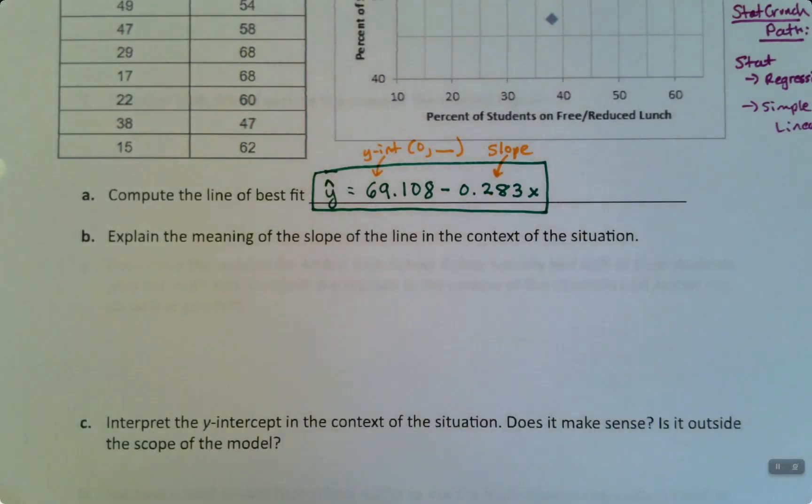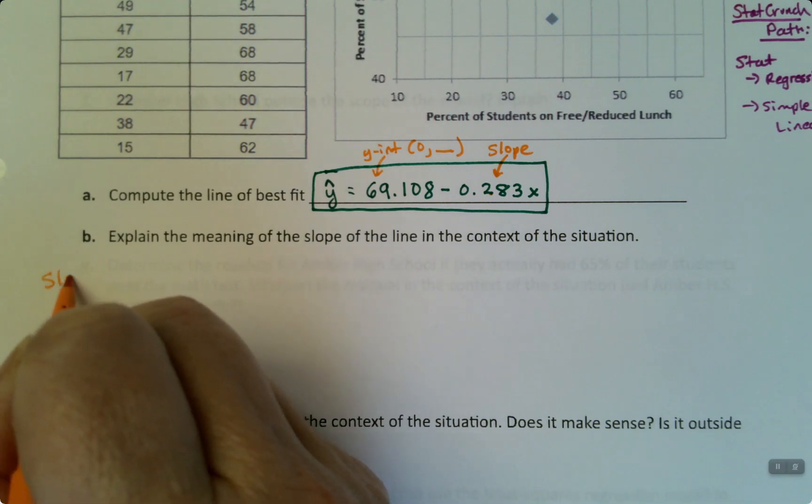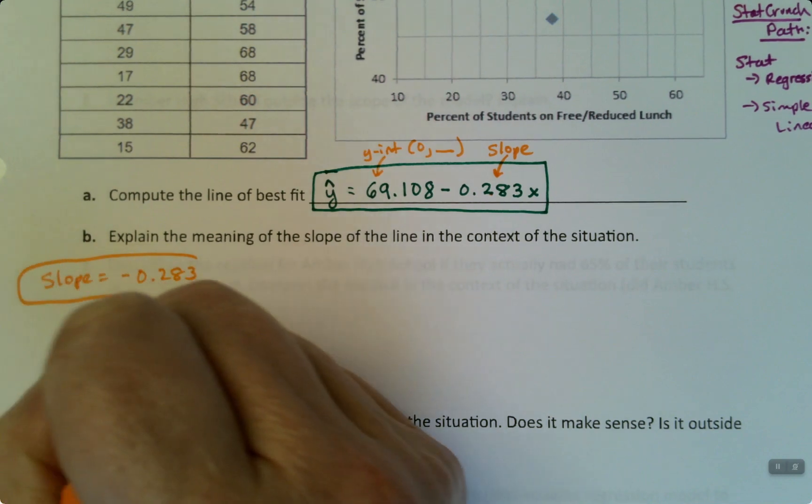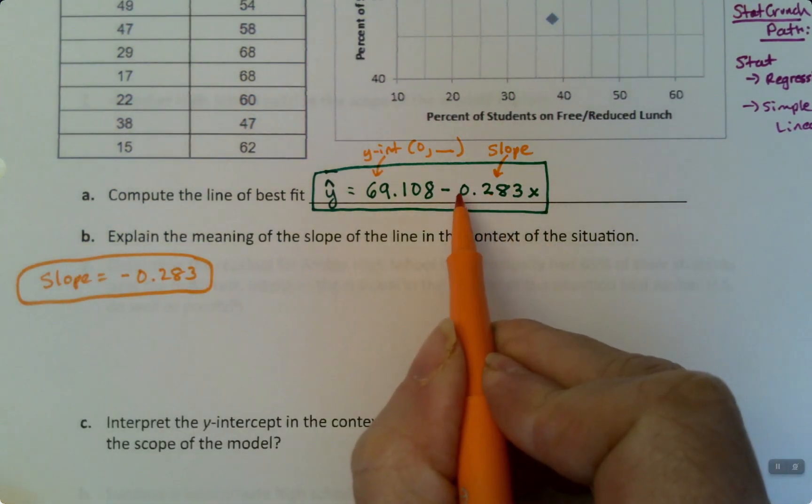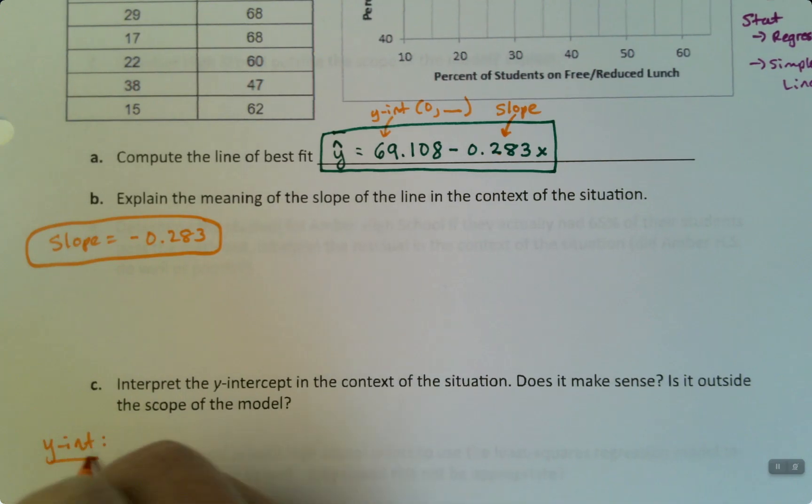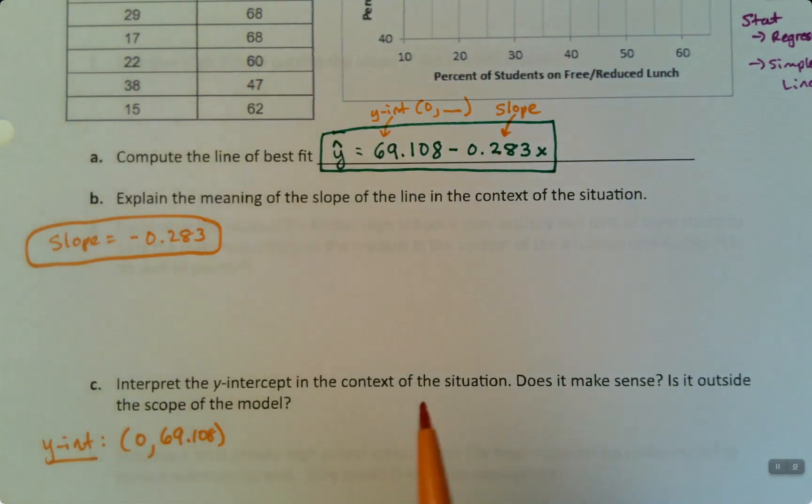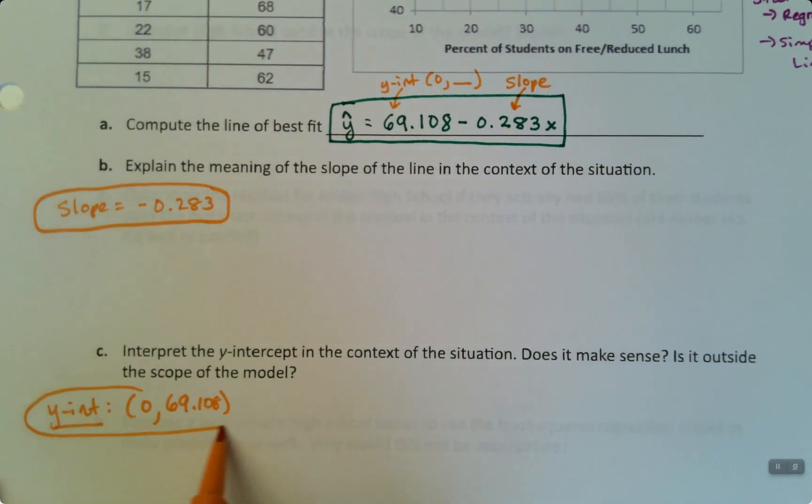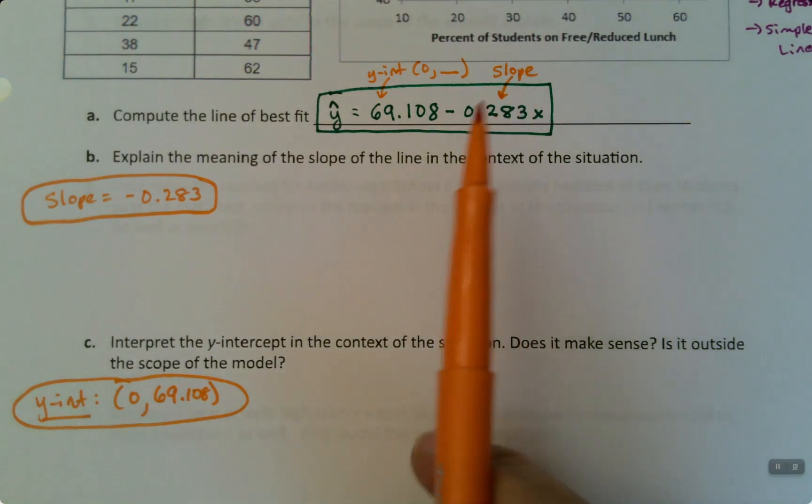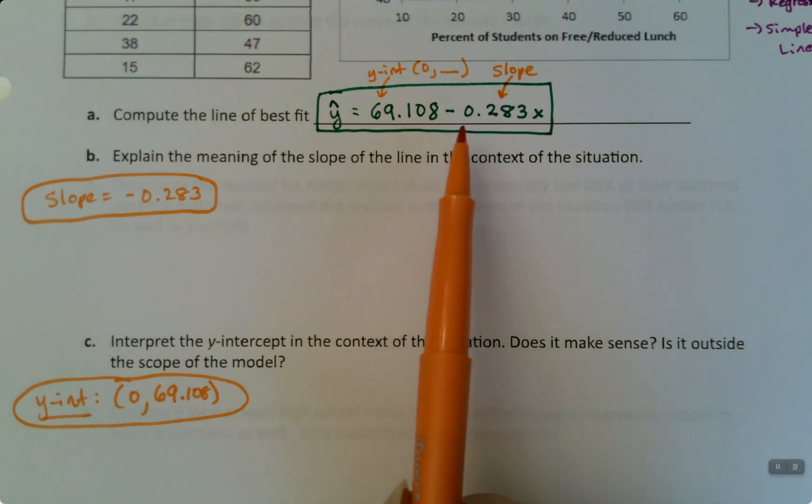So I can actually put those values down here. The slope is negative 0.283. It's negative because there's a negative sign. The Y-intercept will be 0 comma 69.108.